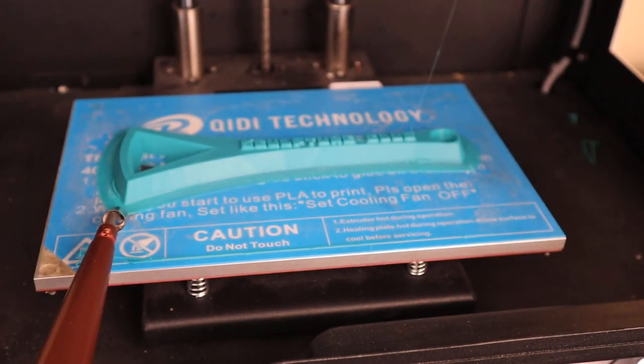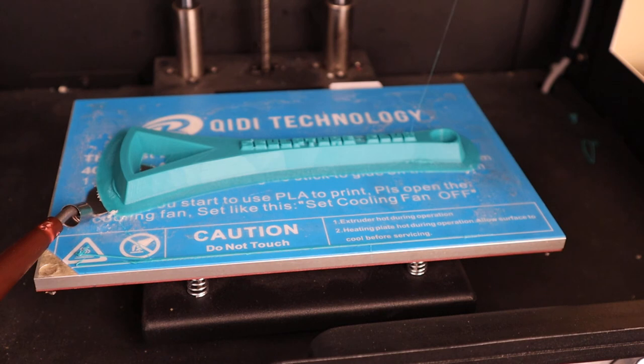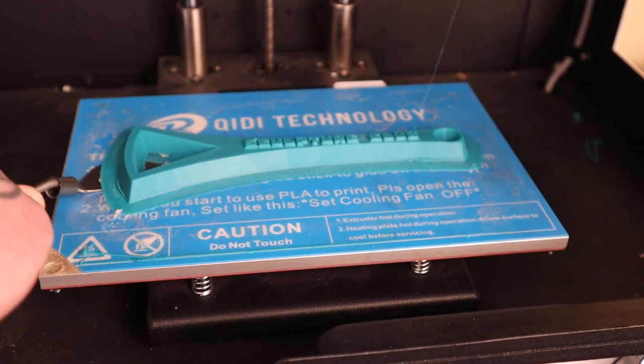And you can see that the pallet knife slides under and it begins to break that kind of seal. But you can see I'm pushing away from myself.